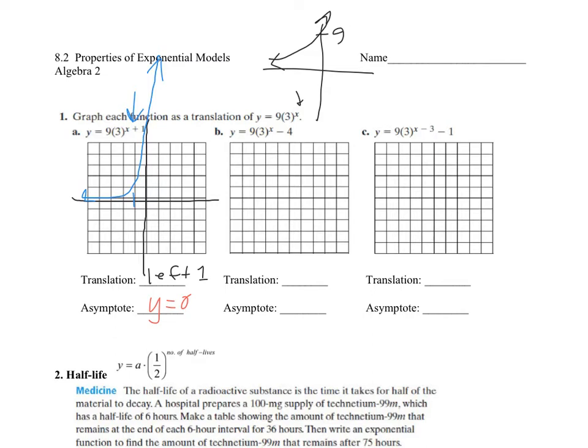So for the second one, what's going on with this function is it's moving down 4 in the y-direction. So you're taking this function right here and you're just moving it down 4. So let's see what happens with the y-intercept. If we plug in 0 for x, it's going to be 9 times 1, take away 4. So the y-intercept is going to be 5.